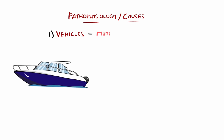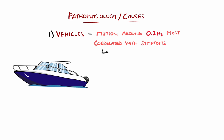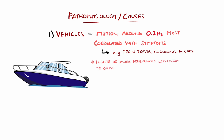It has been found that motion around the 0.2 hertz frequency is most correlated with development of symptoms, with frequencies much higher or lower not generally causing symptoms. Train travel and cornering in cars tends to be around the 0.2 hertz frequency, and so tend to cause symptoms.